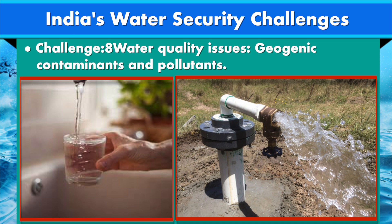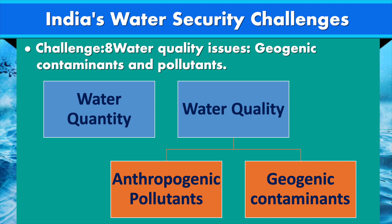10 to 15 years back, we used to drink municipal water or bore water directly. But now things have drastically changed. We already deliberated on supply side issues and growing demands. However, it has another dimension as well. The quantum of available surface and groundwater resources is also declining due to quality deterioration or restriction of use. The problem is twofold: the first is geogenic contaminants, and the second is pollution from cultural or anthropogenic sources.